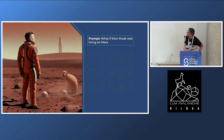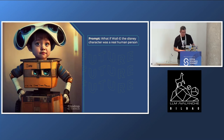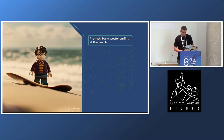So this is Stable Diffusion from Stability AI. Here's a prompt: 'What if Elon Musk was living on Mars?' This one: 'What if WALL-E, the Disney character, was a real human person?' And these are some amazing images created by generative AI. Next, we have the Joker as a Disney princess — this one is a bit scary. And finally, Harry Potter surfing at the beach.